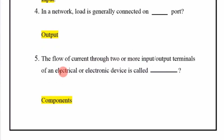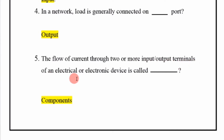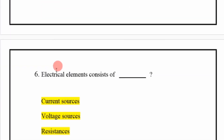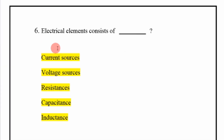The flow of current through two or more input-output terminals of an electrical or electronic device is called its components.